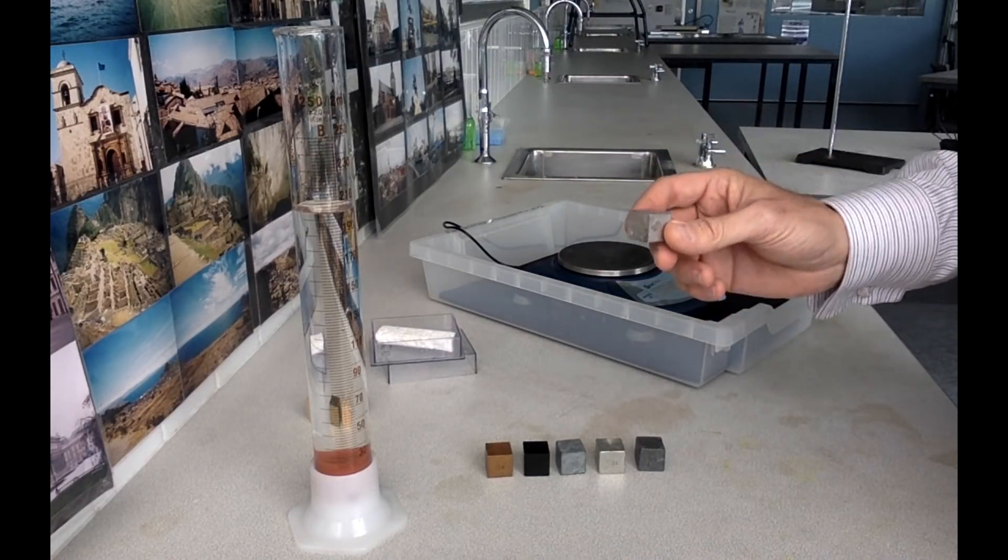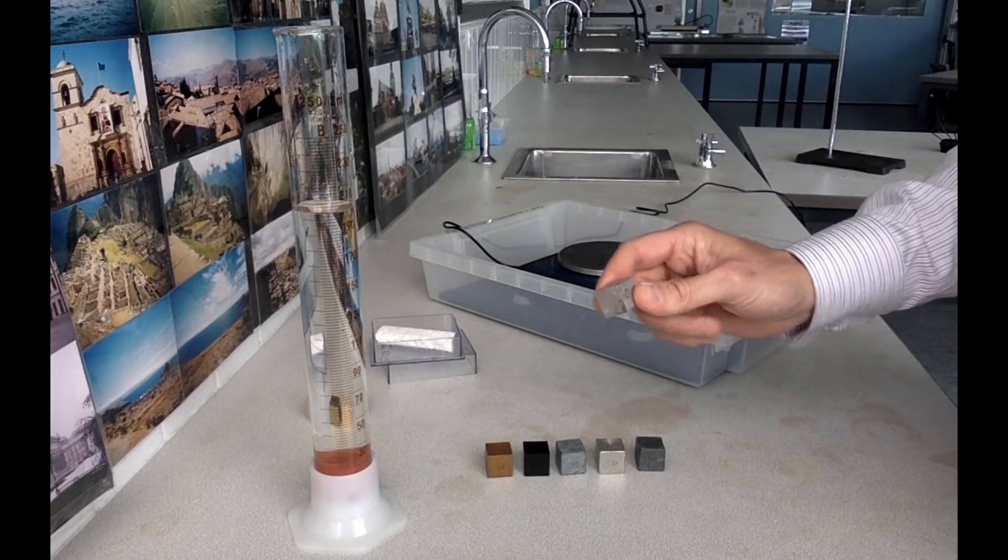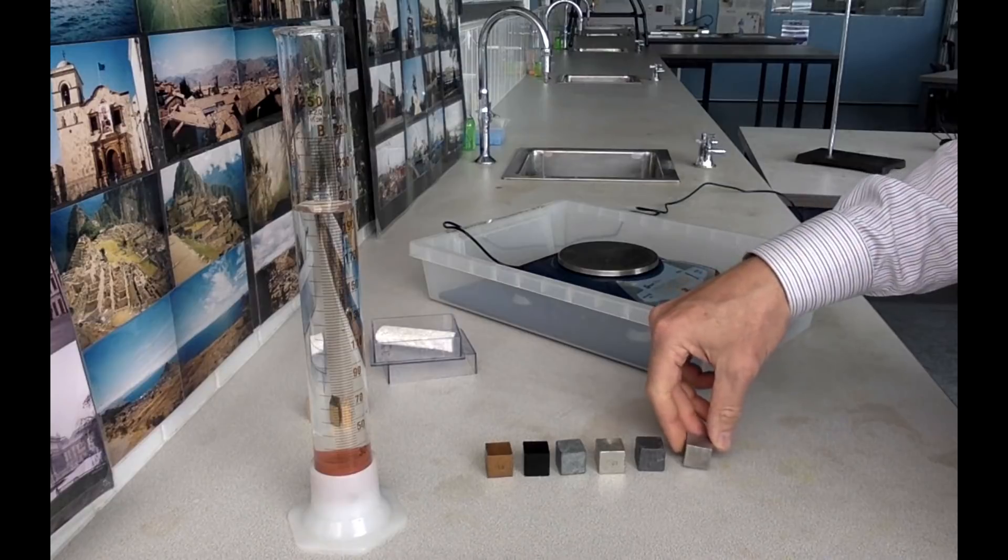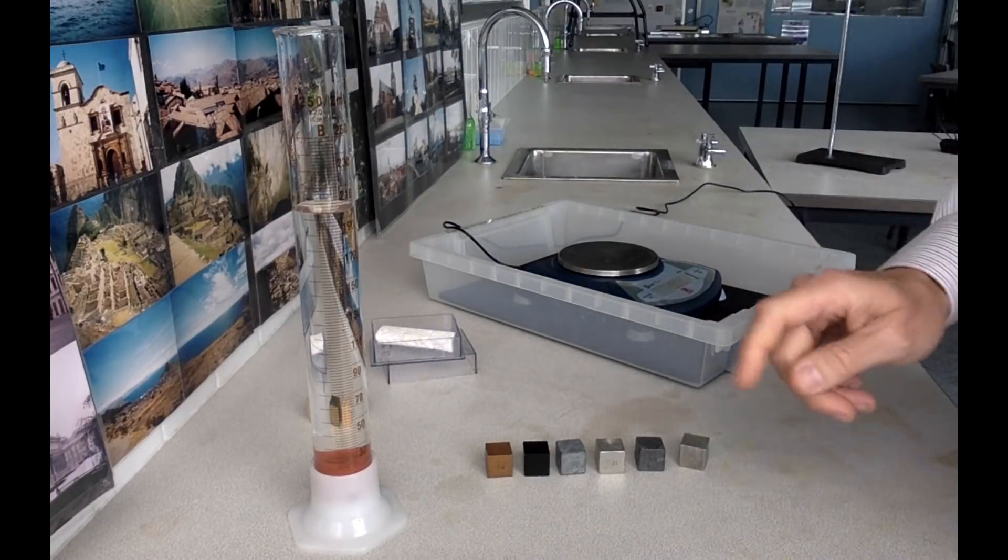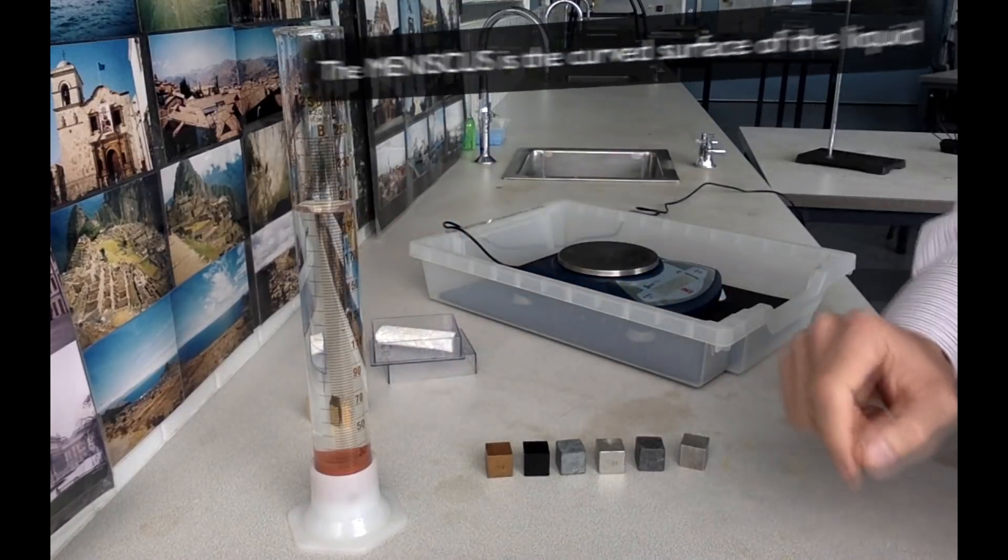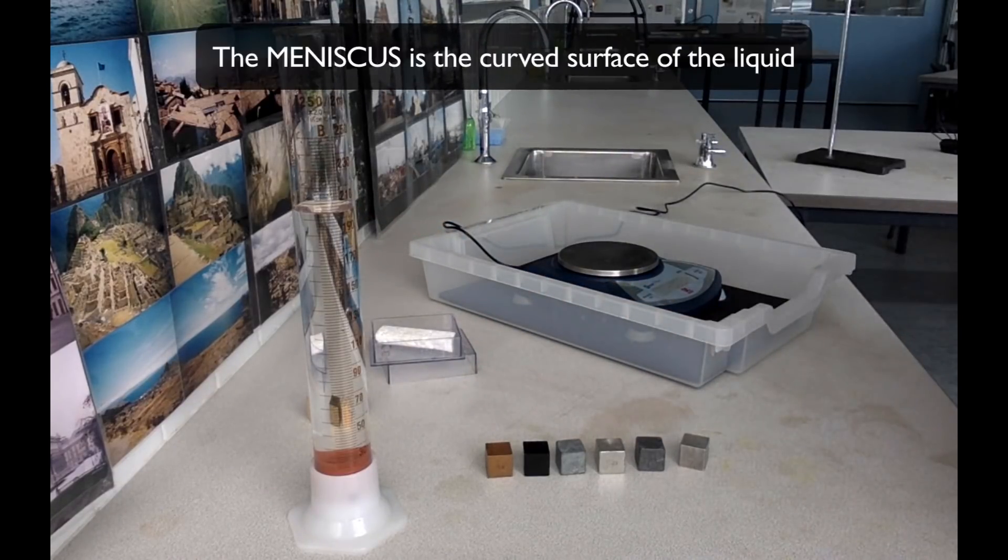Now we need to measure the volume of this cube. We're going to do that by putting it in the measuring cylinder and seeing how much water it displaces. To do that, you need to know how much water is in there to begin with. Measure the volume of the water, remembering to measure from the bottom of the meniscus.